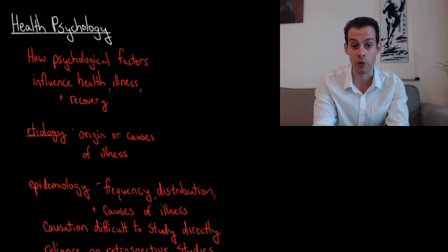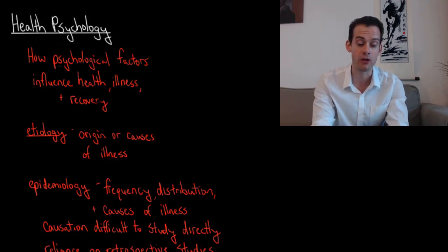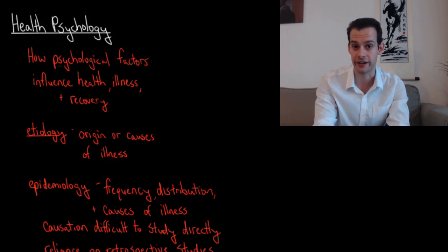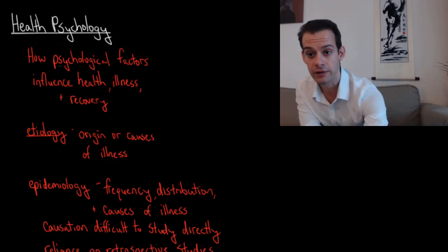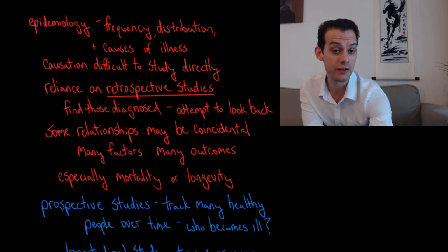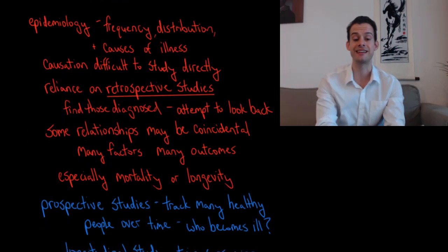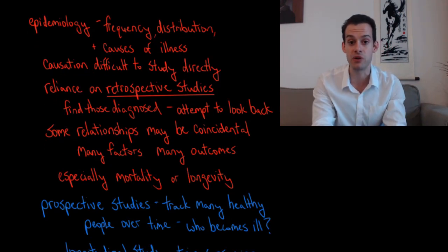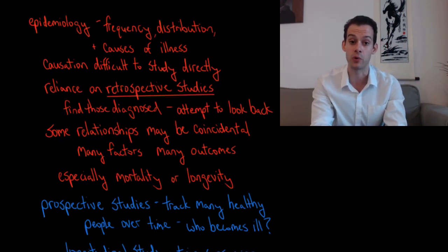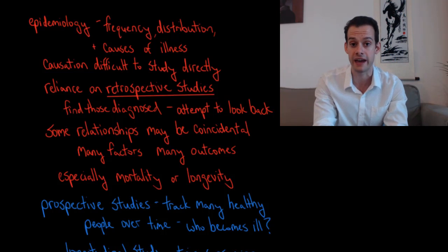One important key term here is etiology — and you may also see this spelled with an A in the front — and etiology refers to the origin or causes of an illness. A related field is epidemiology, which involves investigation of the frequency and distribution of an illness within a population as well as the possible causes of that illness.